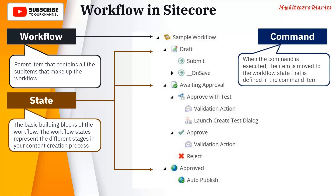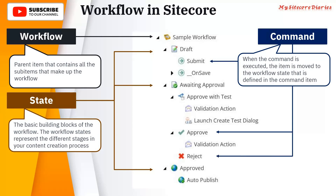Then you have a Command. When a command is executed, the item is moved to the workflow state defined in the command item — you define what the next state is. For example, Draft can be your initial state, and when you click Submit, it will move to Awaiting Approval. That Submit is your command. If you click Approve, it moves to Approved; if Rejected, it goes back to Draft.